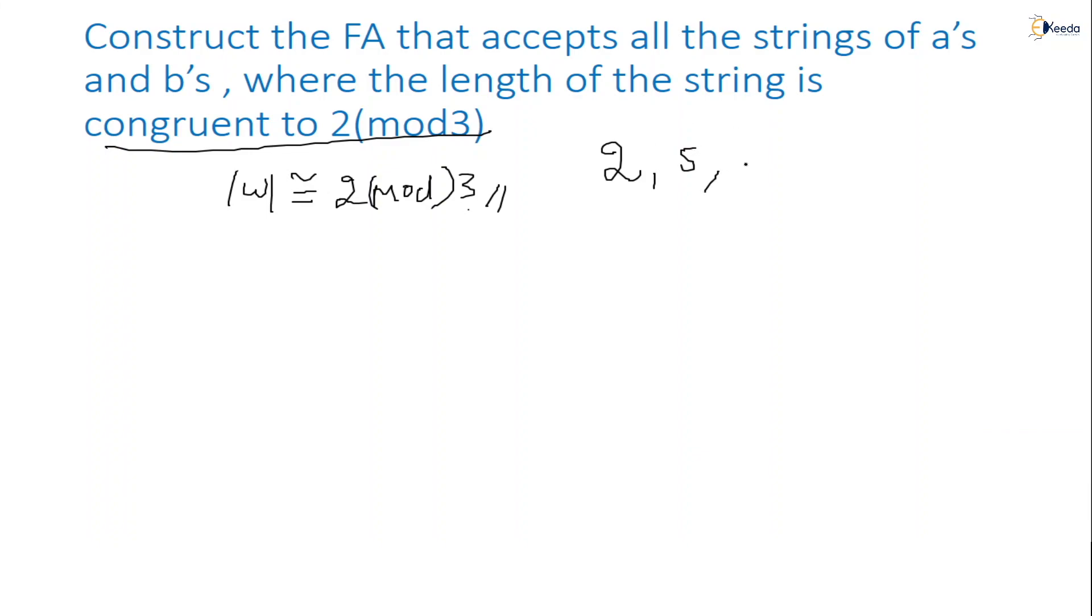String length 11 is there, when you divide with 3 we will get remainder as 2. These are the lengths that will be there. Now we need to construct FA for this. Q0 on a comma b, it could be anything, no restriction for number of a's and number of b's.